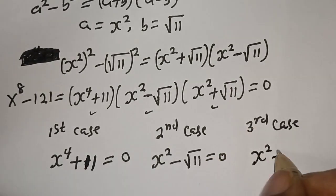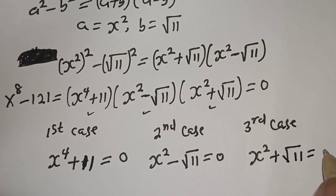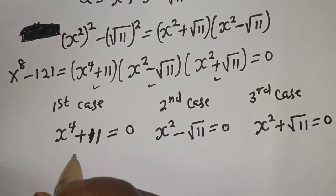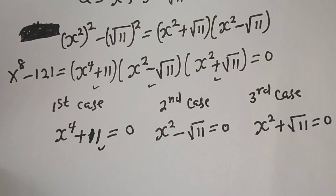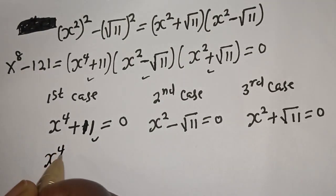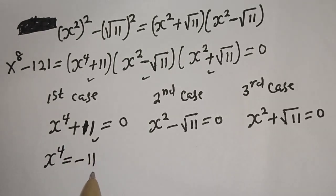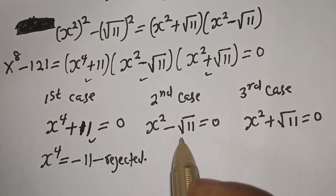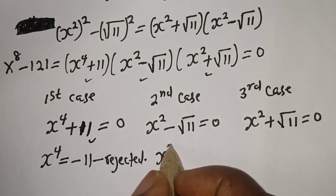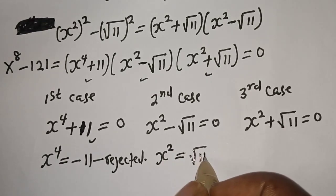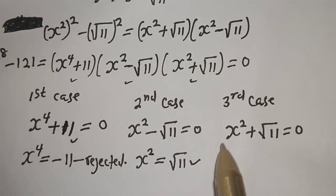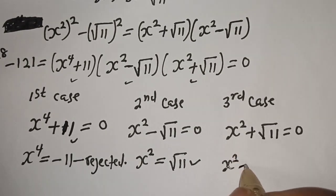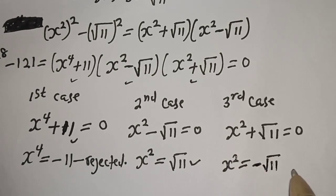From the first case, s raised to power 4 plus 11 is equal to 0, giving s raised to power 4 equals minus 11. But we know that s raised to power 4 cannot be equal to minus 11, so this is rejected. From the second case, s squared is equal to root 11, so this is a true solution. From the third case, s squared is equal to minus root 11, and s squared cannot equal minus root 11, so this is also rejected.